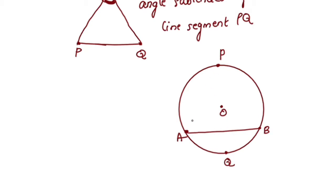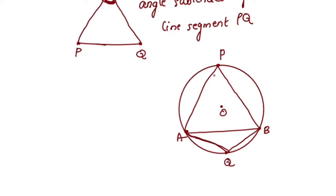I join PA and PB. This gives us AQ and QB. This is the chord AB at the points P and Q respectively.